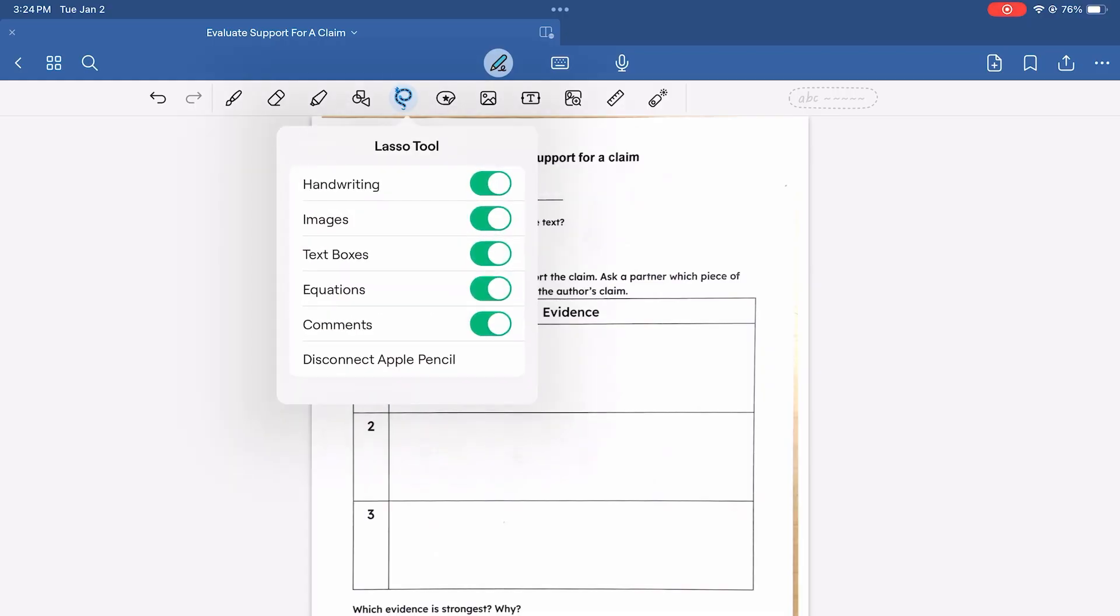The lasso tool allows you to edit and remove selected objects including handwriting, images, text boxes, math equations, and comments. Click on the lasso tool to turn on the feature and select the particular types of objects that can be edited.